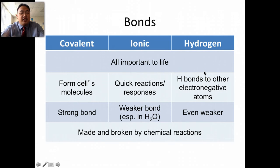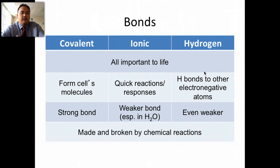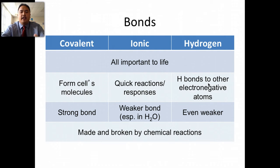Then there's hydrogen bonds. Hydrogen bonds exist in water. They're a result of the polarity of water — water is polar, meaning it has a positive end and a negative end. So this hydrogen bond exists because of the attraction of positive to negative. This one's even weaker than ionic bonds. And all these types of bonds are made and broken by chemical reactions.